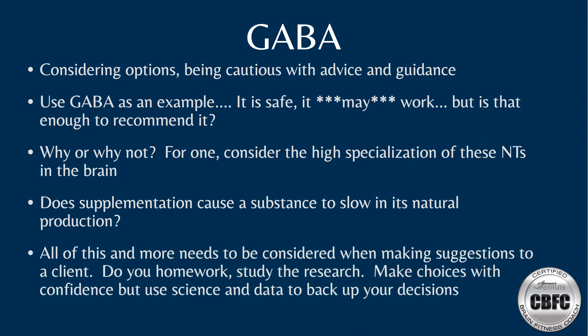Consider melatonin as an example: some researchers believe that regular supplementation can teach the body to stop making adequate melatonin on its own. Additionally, GABA has not been shown to cross the blood-brain barrier, and newer research notes it has not been thoroughly tested on humans. More testing is needed before making definitive suggestions about its use as a supplement. It is important to be critical and consider all angles when discussing supplementation with clients. This wraps up our training on neurotransmitters, though a separate chapter and reading are dedicated to this topic, and any of this information can appear on your exam.